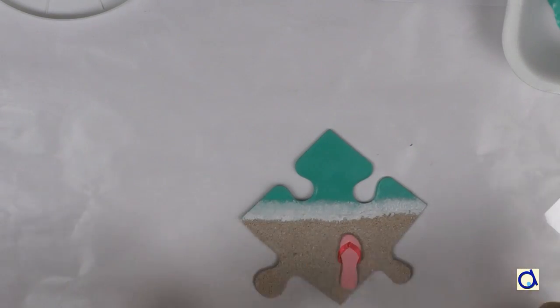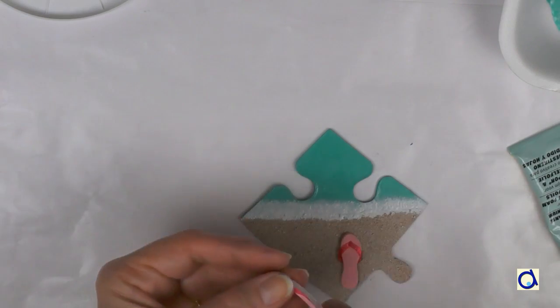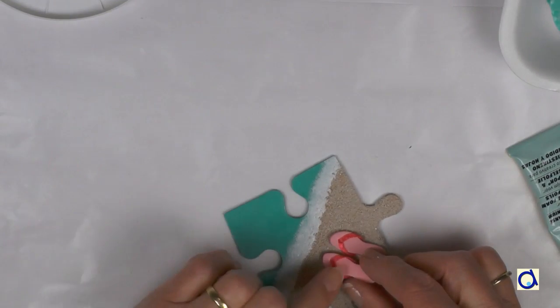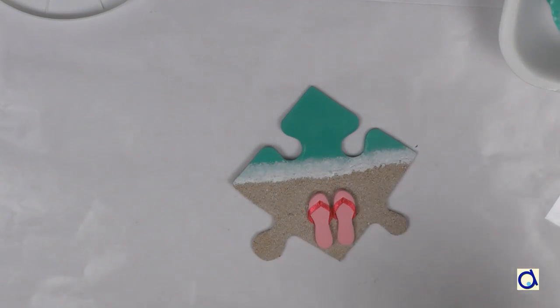Glue the little sandals with glue on the sand side of the puzzle piece. If you cannot find small adhesive sandals, you can cut them out of a piece of foam or paint them on construction paper and glue them in place.